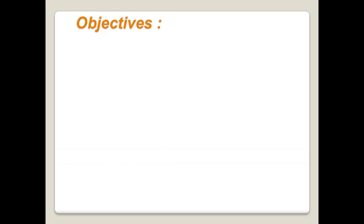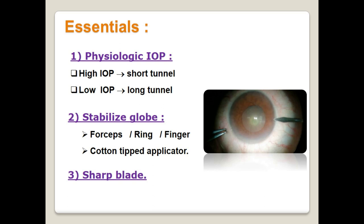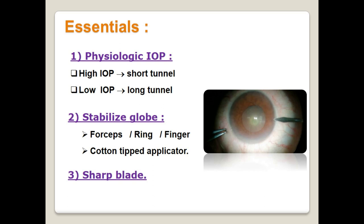What are the essentials for a good wound construction? First, create the tunnel on a normally pressurized globe. Avoid high intraocular pressure, as it yields a short tunnel. Also, soft eyes yield a longer than expected corneal tunnel. Second, for precise control of your keratome, stabilize the globe. This stabilization can be achieved with a forceps, a fixation ring, or your fingers.